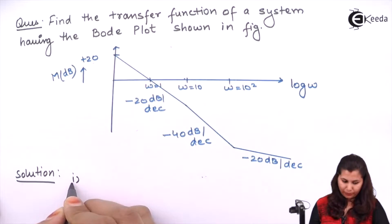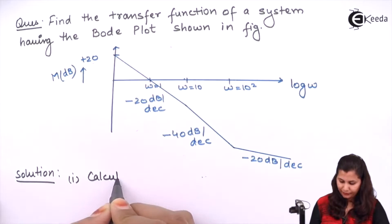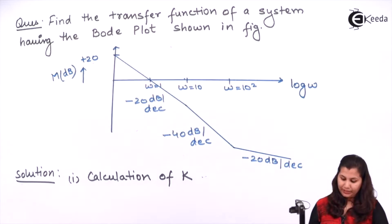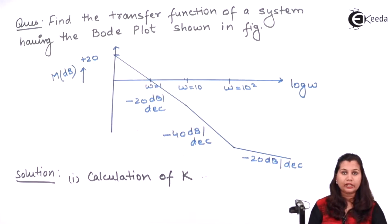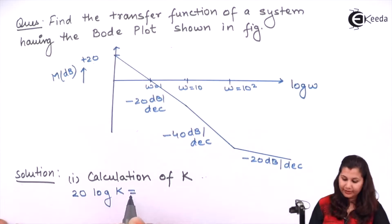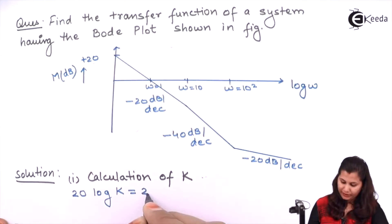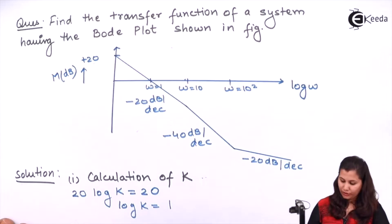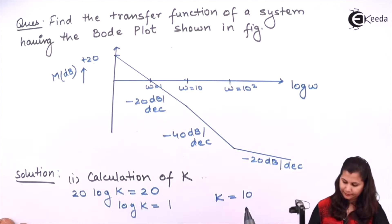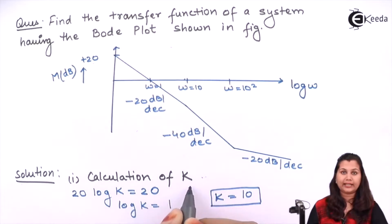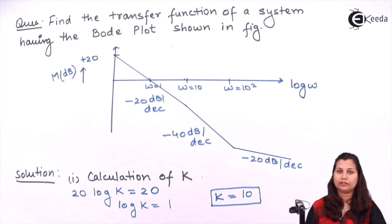So first we will calculate the gain of the system — that is the value of K in the transfer function. In the Bode plot, this point is equal to the magnitude 20 log K, where K is the gain. So we have 20 log K equals 20 dBs. Therefore log K equals 1, so K equals 10.